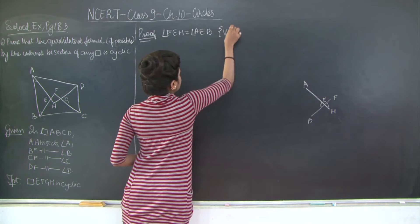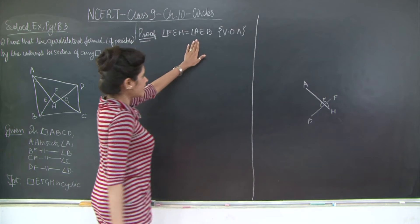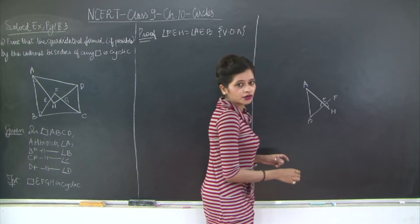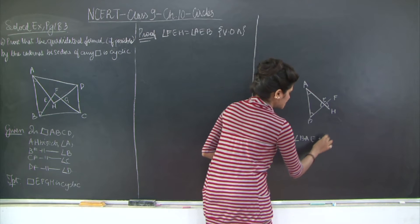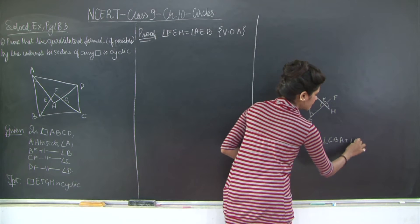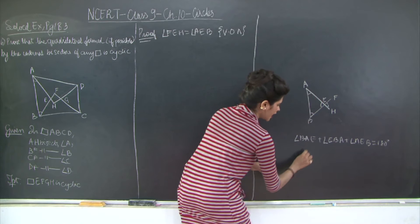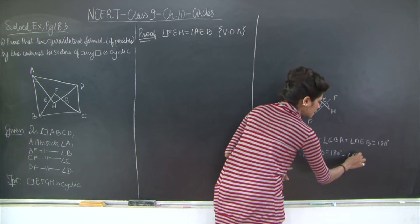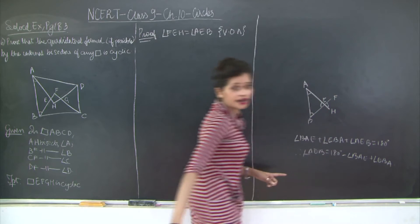Now, angle AEB is found using triangle AEB. In triangle AEB, angle BAE plus angle EBA plus angle AEB equals 180 degrees. Therefore, angle AEB equals 180 degrees minus angle BAE plus angle EBA.